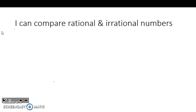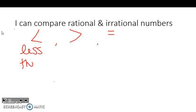First things first is to review what signs we use to compare numbers. Hopefully you remember how to compare numbers from years past. We use three different signs. This one is going to be the less than sign. One way I remember the difference between less than and more than is if the little arrow or the point is towards the left, then it's less. Left and less start with the same letter.